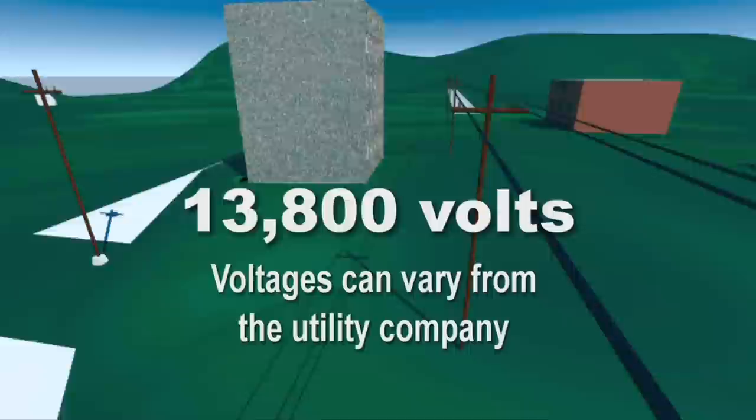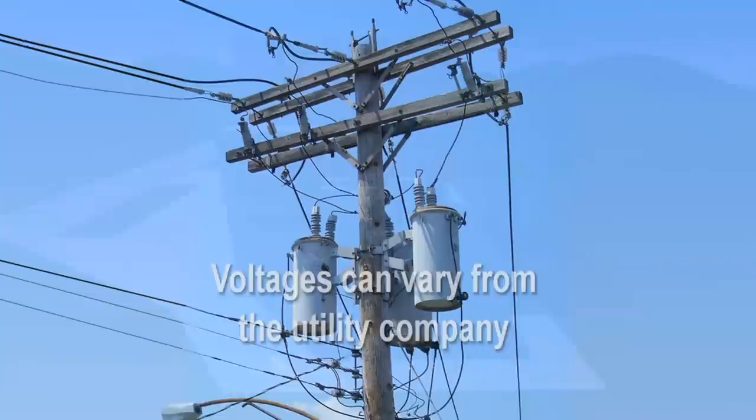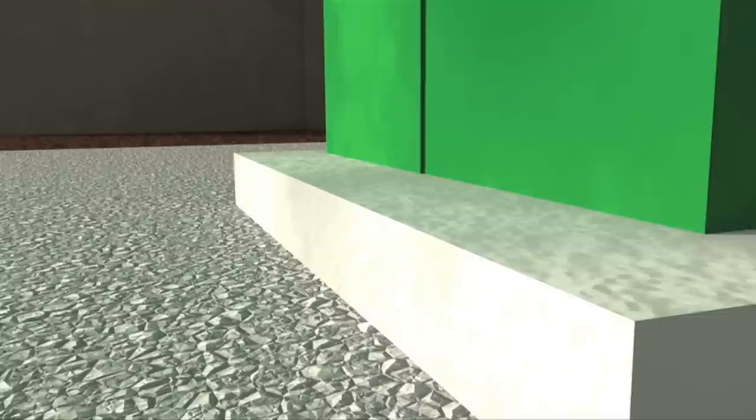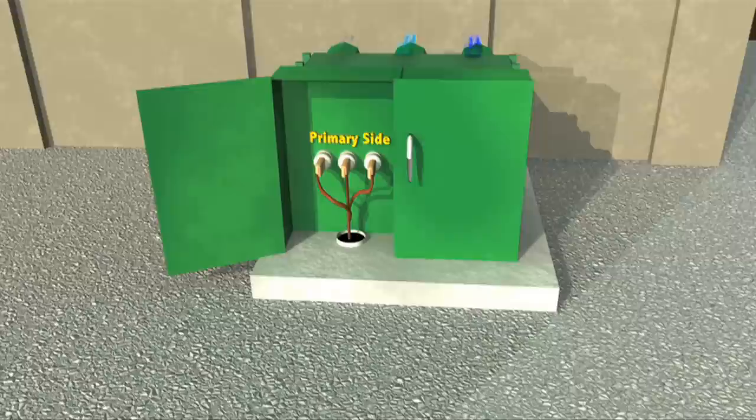In our example, we begin with the utility company supplying 13,800 volts from the road to a utility pole in the parking lot. At the top of this pole, you see three transformers. These transformers will step down the 13,800 volts to 4,160 volts. This voltage is transferred down the pole through copper wires that are encased in conduit. This conduit travels underground and enters the oil transformer on the high or primary side of its junction box.